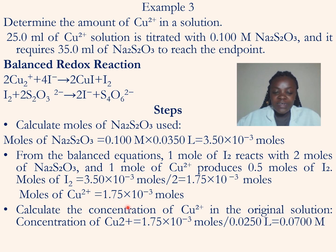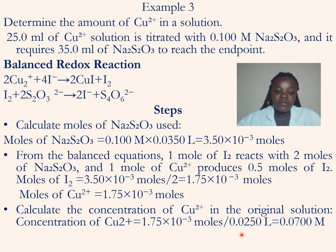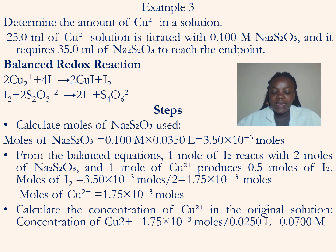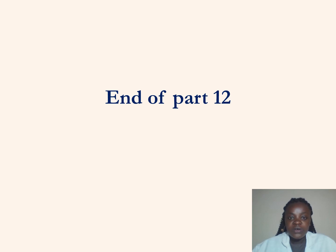Likewise, the moles of copper ions equal 1.75 × 10⁻³ moles. To calculate the concentration of copper ions: concentration = moles ÷ volume in liters = 1.75 × 10⁻³ ÷ (25 ÷ 1000) = 0.07 molar, or 0.07 moles per liter. That is how we calculate the concentration of the analyte in a redox titration.